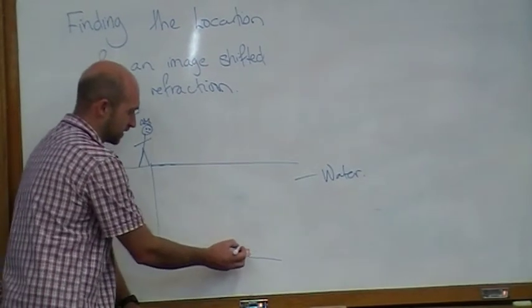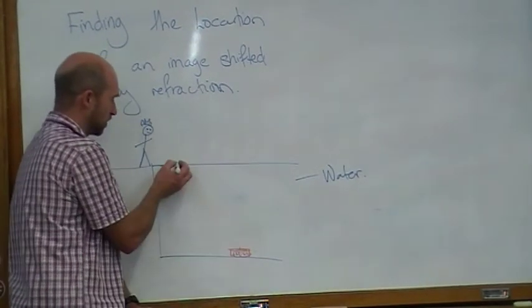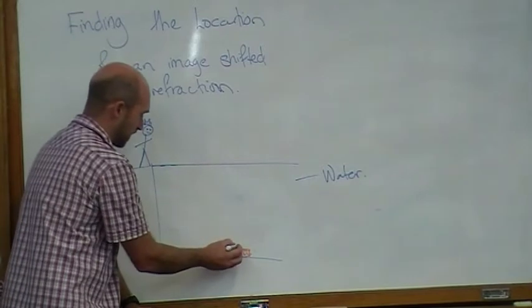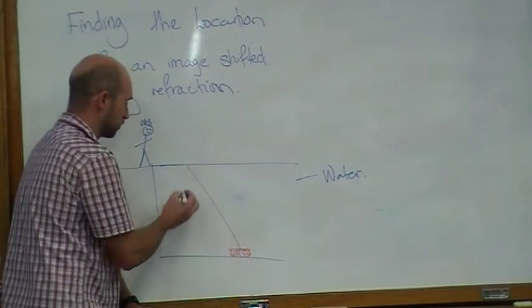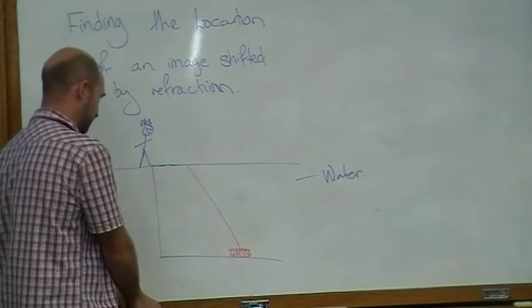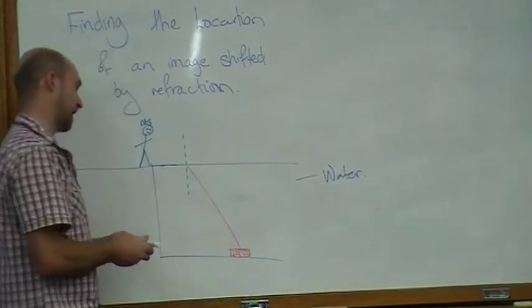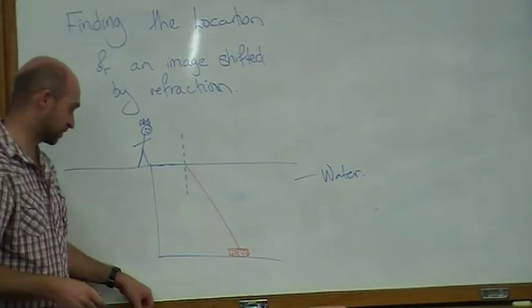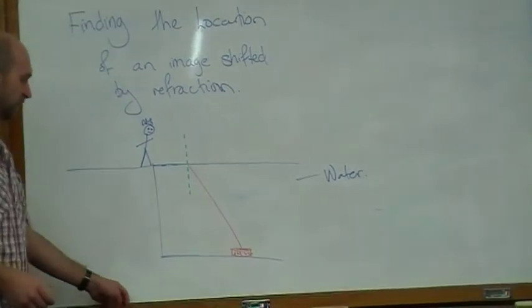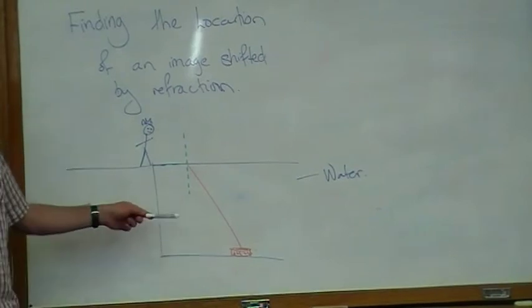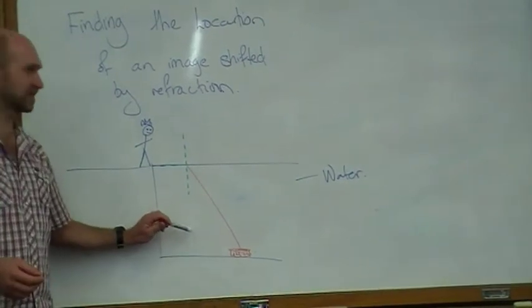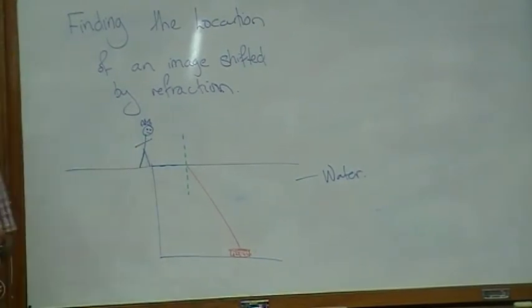So if the light is going to come from the gold to you, it's going to come up towards you, and then we know that as it reaches that normal between the two different media, between the water and the air, because it's going from water, which is more dense, into air, which is less dense.